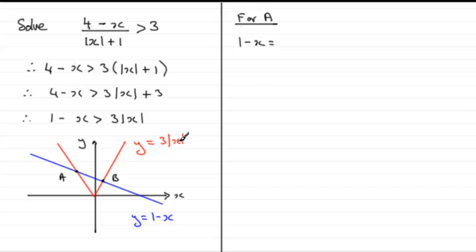So that would be when 1 minus x equals the negative branch, that would be 3 times negative x or minus 3x. And so rearranging this, if I add 3x to both sides and subtract 1 from both sides, I'm going to get 2x equals minus 1. So therefore dividing by 2, x will equal minus 1 half.